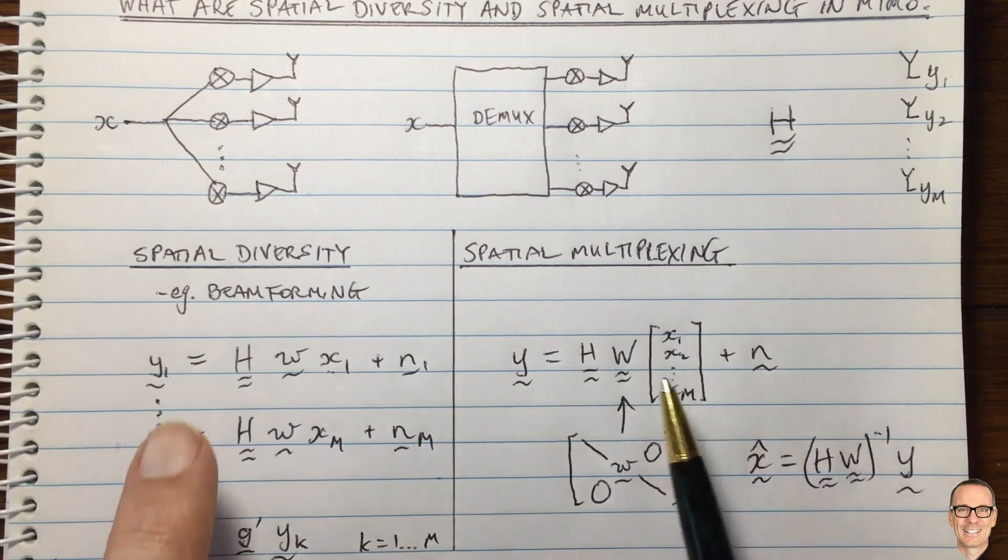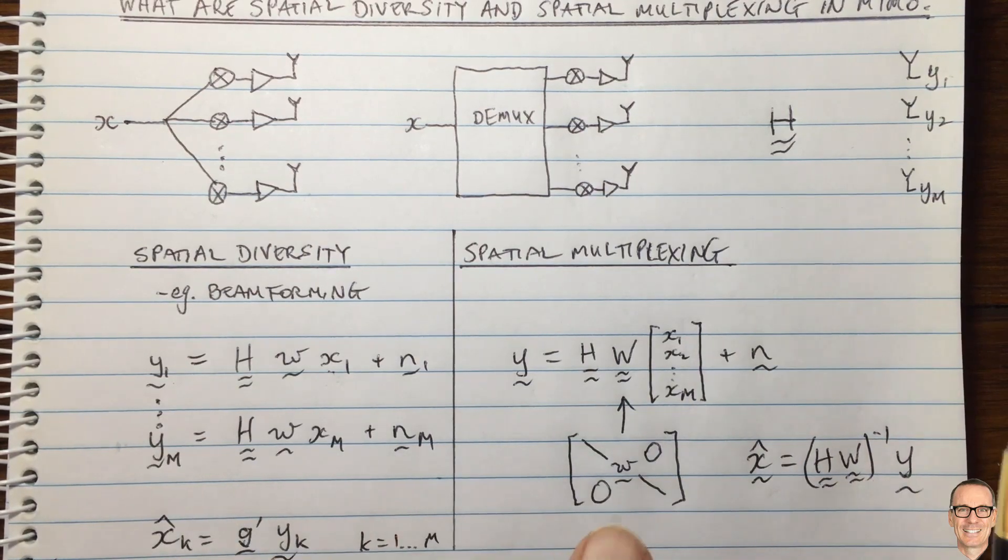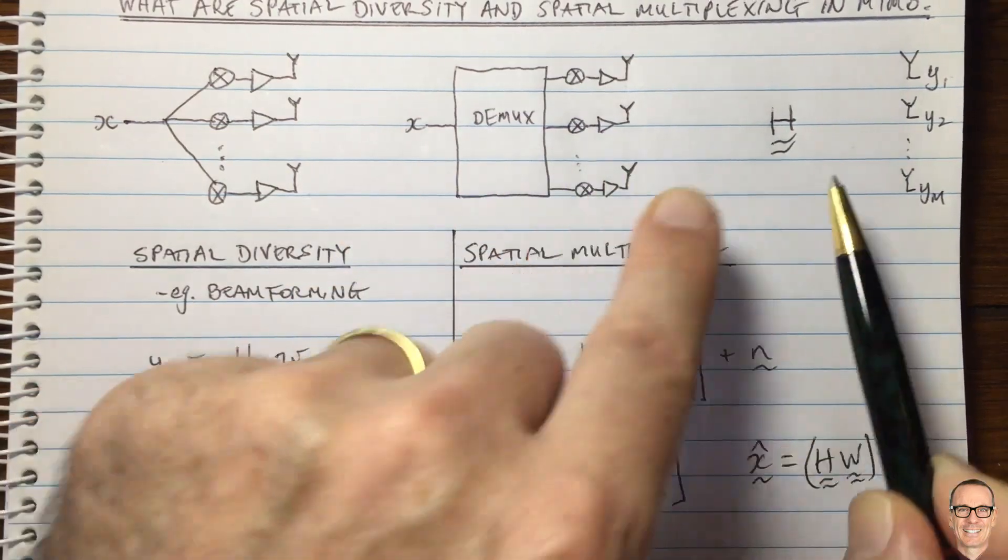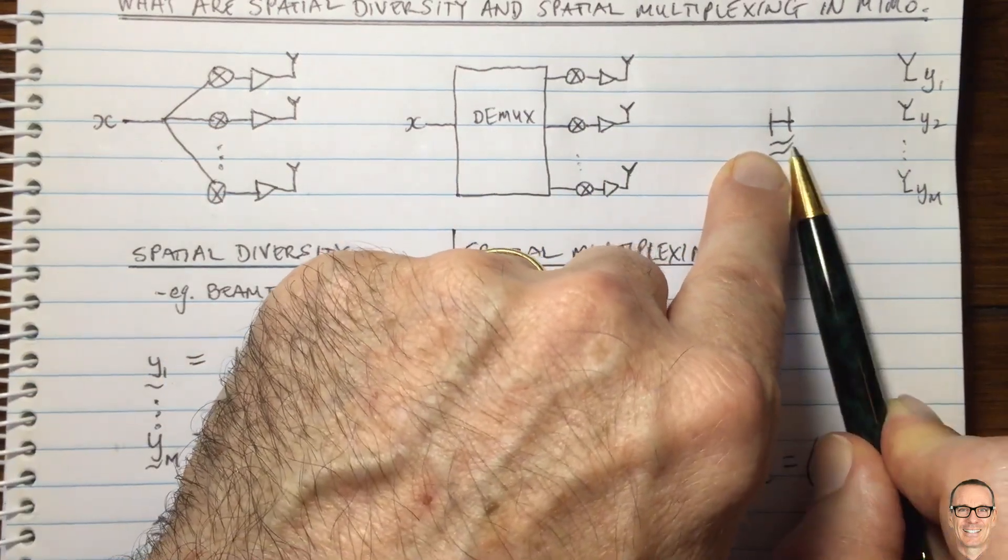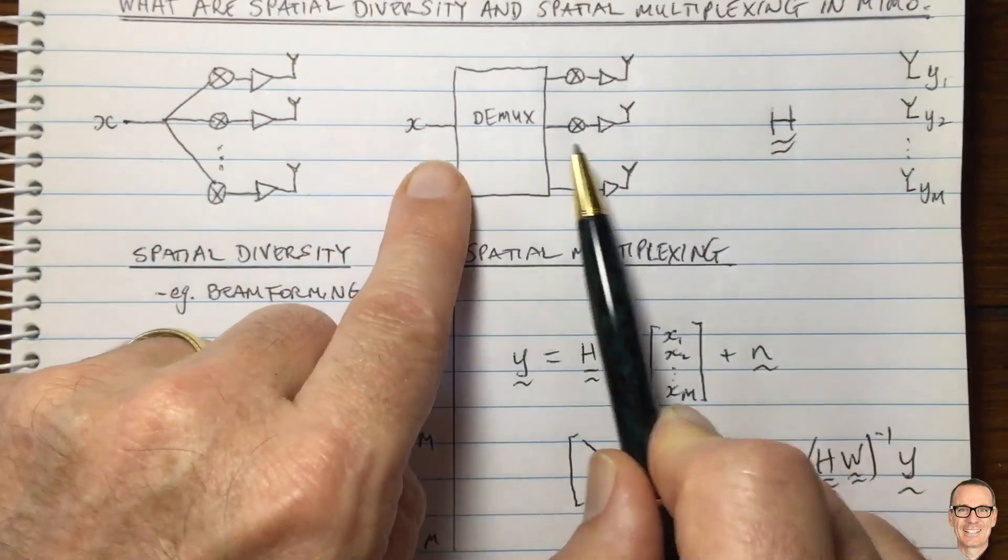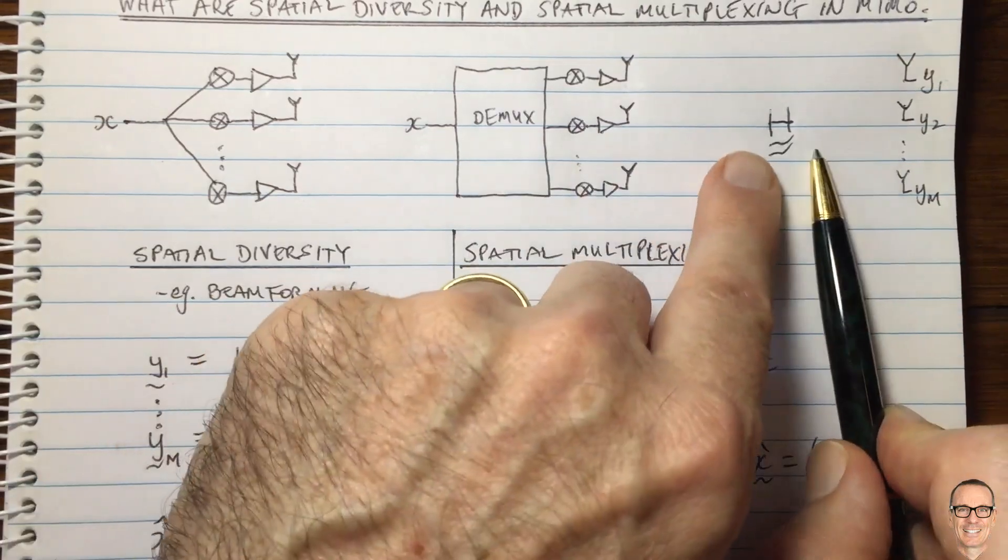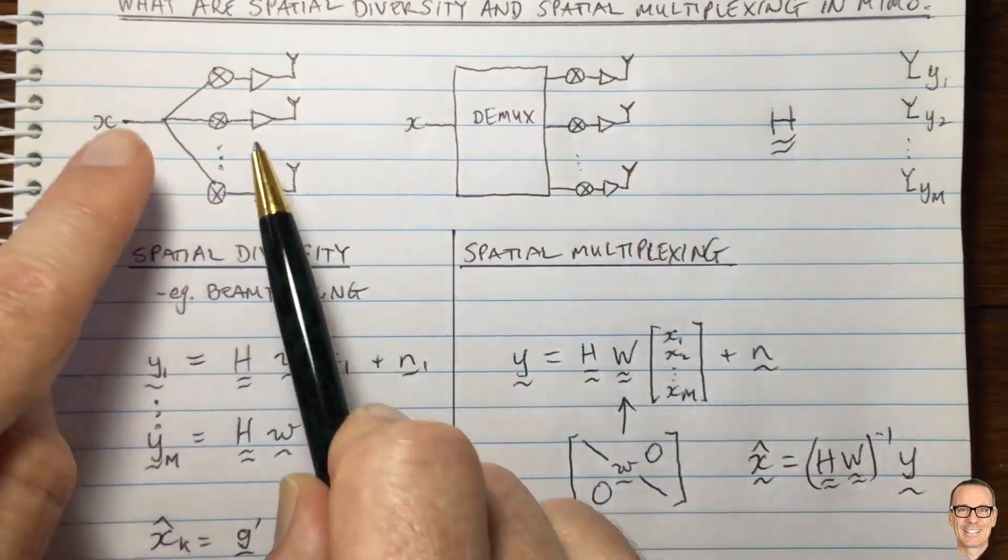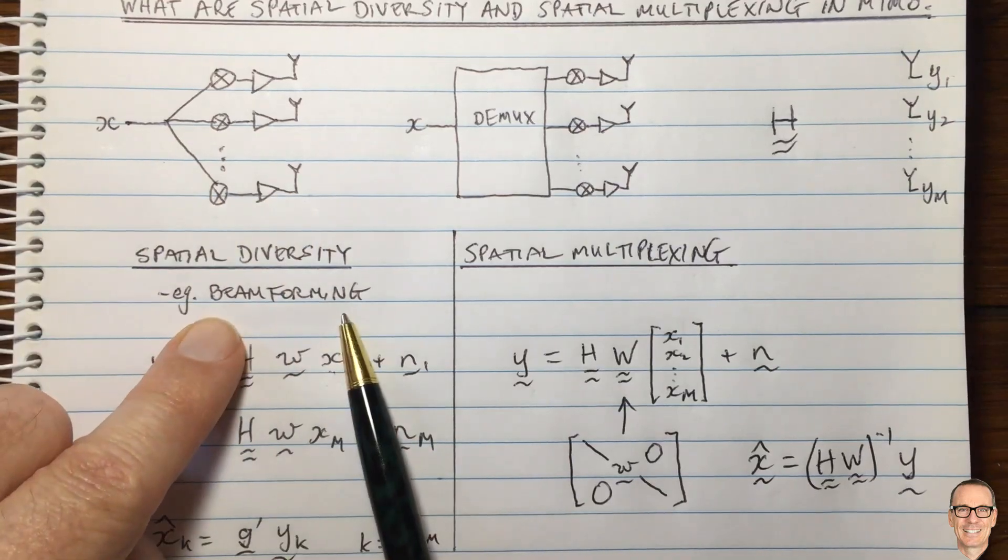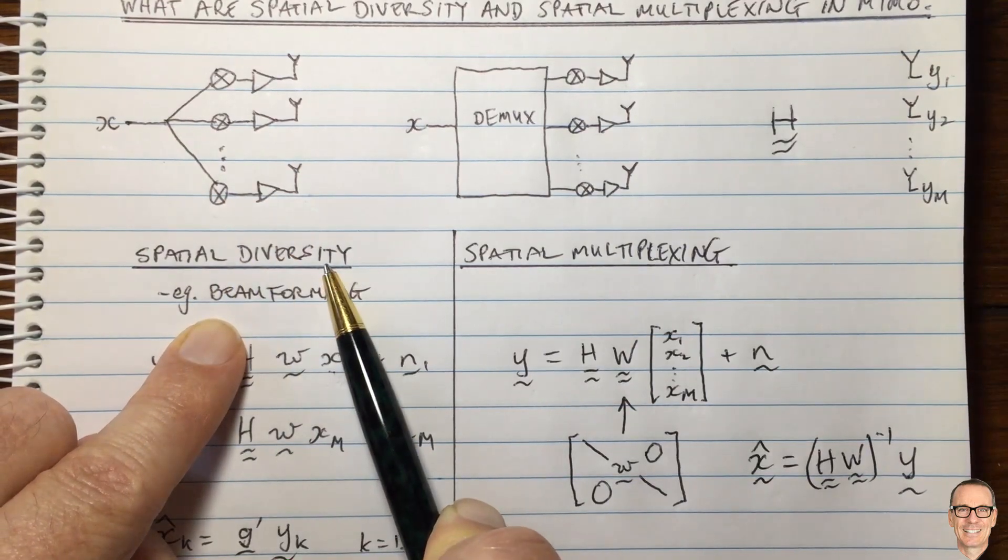So this is the mathematics that shows you why it's necessary if you want to use spatial multiplexing, you need to be able to invert the channel. And that only happens when the channel has rich scattering. That's when you would use multiplexing. If the channel has a direct line of sight, then you want to direct all your energy in that direction using beamforming, and then you are going to use spatial diversity.